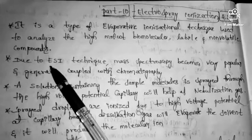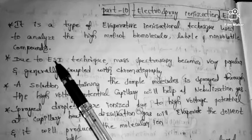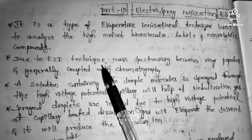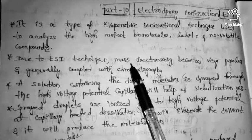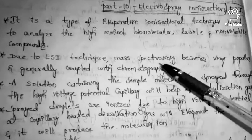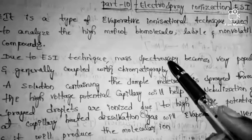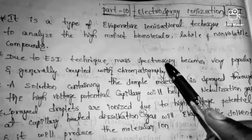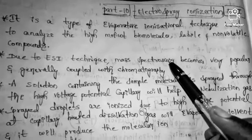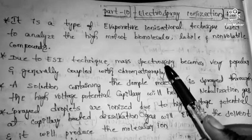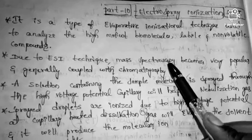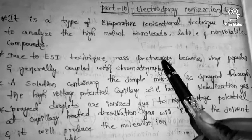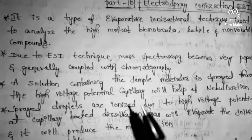Due to electrospray ionization, mass spectrometry became very popular and is generally coupled with chromatography. Note: the correct term is mass spectrometry, not mass spectroscopy, because electromagnetic radiations are not used in this technique.